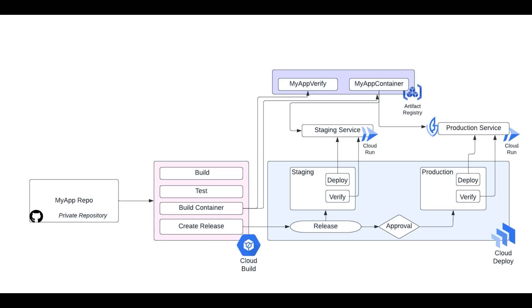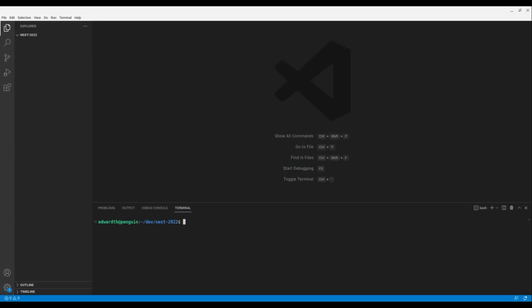From there, we can choose to promote a successful release to production. To ensure production stability, we've configured Cloud Deploy to require approvals by a user with the appropriate permissions before allowing it to continue. Once approved, the application will be deployed to the Production Cloud Run service, where another verification job is triggered to ensure everything is working as expected. Now let's take a deeper look at our CI/CD configuration. Our application uses config as code, so doing that is as simple as checking out our GitHub repository.